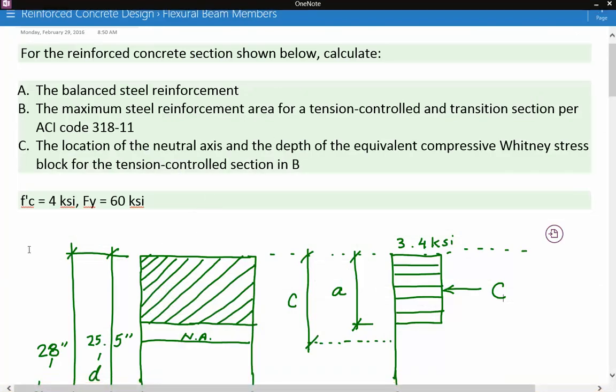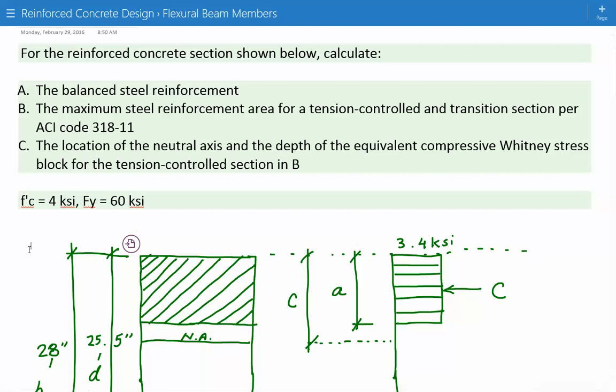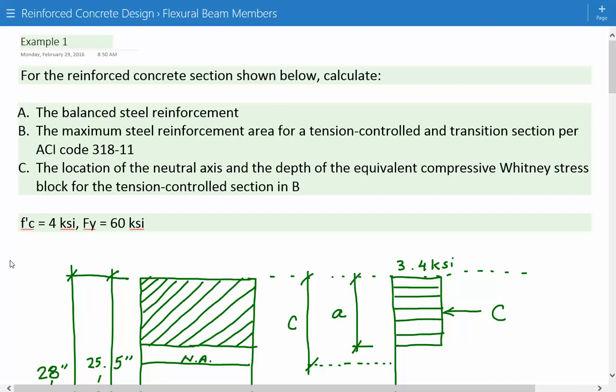Hey everybody, this is example number one in the reinforced concrete design analysis for flexural beam members. The problem statement is for the reinforced concrete section below, we're asked to calculate the balanced steel reinforcement, the maximum steel reinforcement for a tension controlled and transition controlled section per ACI code 318-11, and the location of the neutral axis and the depth of the equivalent compressive Whitney stress block for the tension control section in part B.